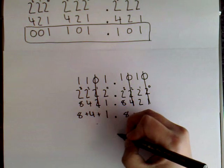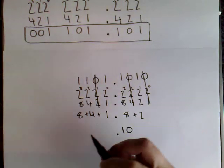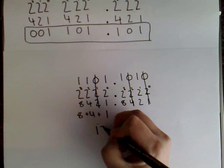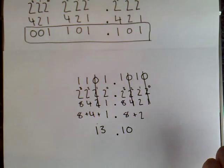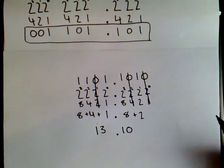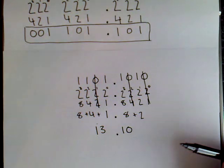And now I just sum up each group separately. So, 8 plus 2 will give me 10. 8 plus 4 plus 1 will give me 13.